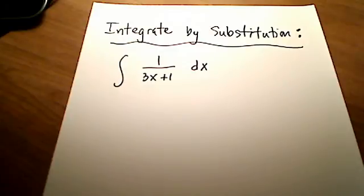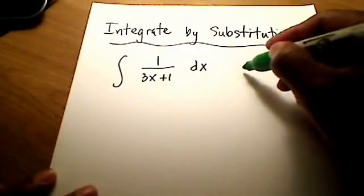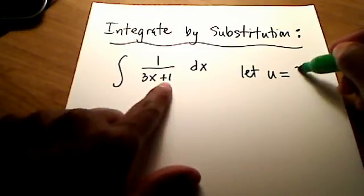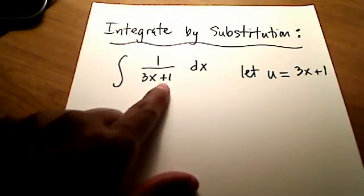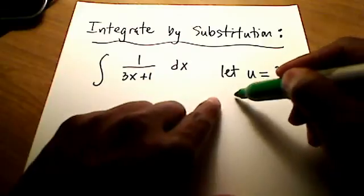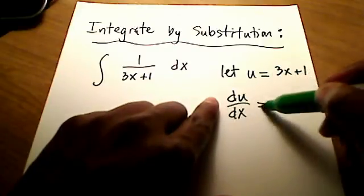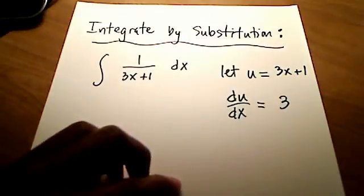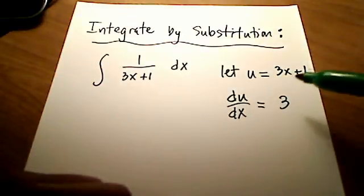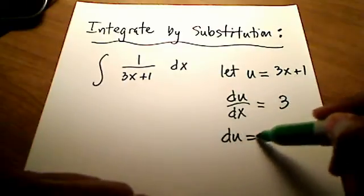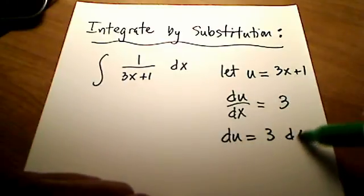We're going to use integration by substitution. Let u equal our entire denominator, 3x + 1. Taking the derivative with respect to x gives 3. Multiplying both sides by dx gives du = 3dx.